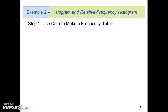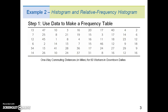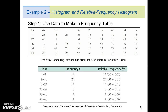Here is an example. In step 1, we will use the given data to make a frequency table. Here is a copy of the data we used in the previous example, and here is the resulting frequency and relative frequency table from the previous example. So step 1 is complete because we have the frequency table completed.